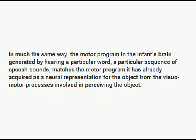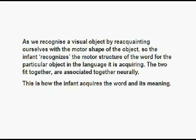In much the same way, the motor program in the infant's brain generated by hearing a particular word — a particular sequence of speech sounds — matches the motor program it has already acquired as a neural visual representation for the object, from the visual motor processes involved in perceiving the object. Just as we recognize a visual object by reacquainting ourselves with the motor shape of the object, so the infant recognizes the motor structure of the word for the particular object in the language it is acquiring. The two fit together and are associated together neurally — this is how the infant acquires the word and its meaning.